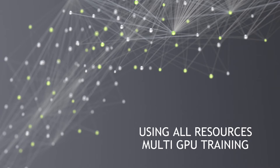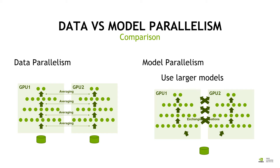The only way to use all these resources is to use multi-GPU training. We have two possibilities. The first one is called model parallelism. Model parallelism is only used if the model takes too much memory to fit into a single GPU. In this case, you just distribute the model across two GPUs as shown here. So the model is distributed among two GPUs, but you still have a single batch shown at the bottom.